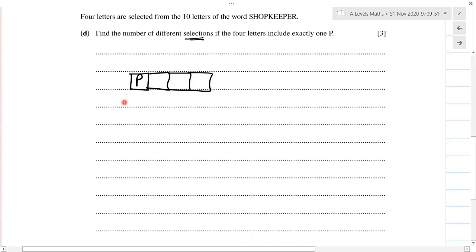How many possible different combinations can we have for one P? So one P, and we need to remember that we have two P's, three E's, and five different letters which are just unique, one each.